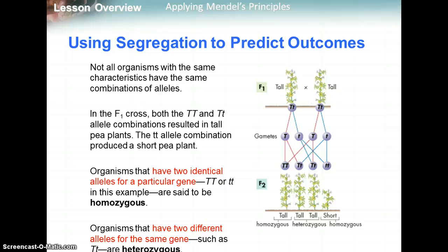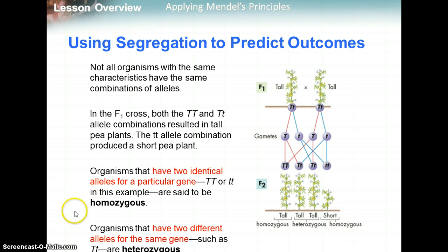Not all organisms with the same characteristics have the same combinations of alleles. Organisms that have two identical alleles for a particular gene — like two dominant big T big T, or two recessive little t little t — are known as homozygous. The prefix homo means same. Organisms that have two different alleles for the same gene — like big T little t — are heterozygous. Hetero means different.